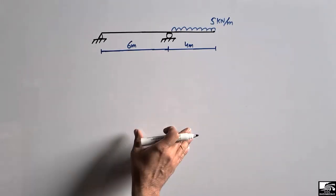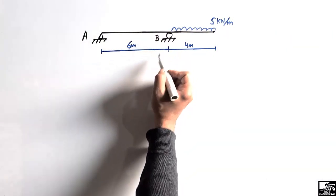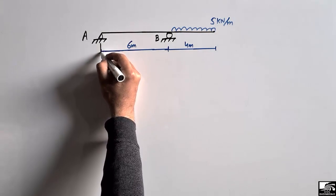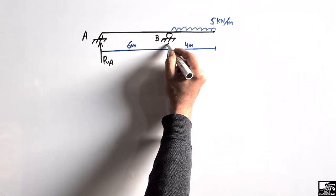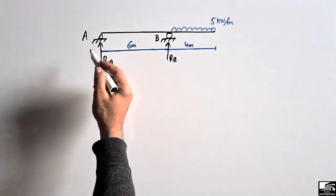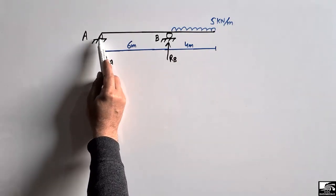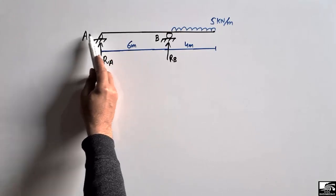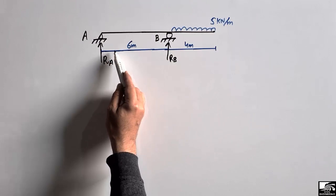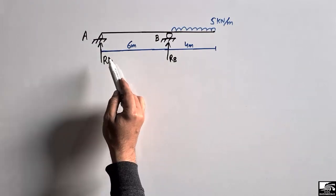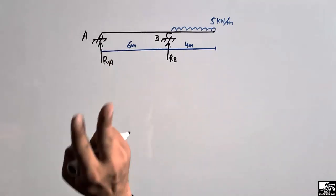Let's call the supports point A and point B, and assume the reactions act in the upward direction — this is RA and this is RB. There is no horizontal load acting on this beam, so we don't need to show a horizontal reaction at the hinge support. The hinge support has the ability to take horizontal load, but since there is none here, we take only the vertical loads into consideration.